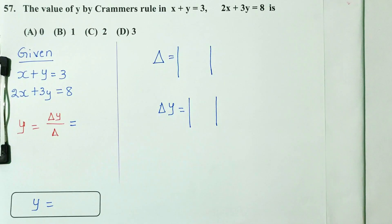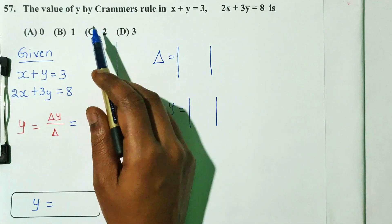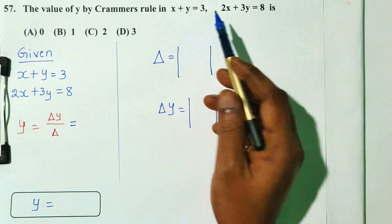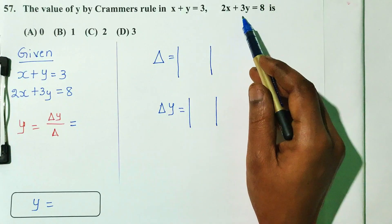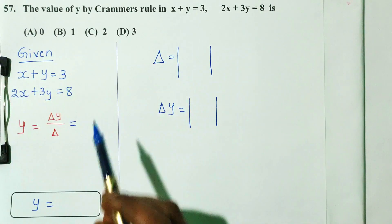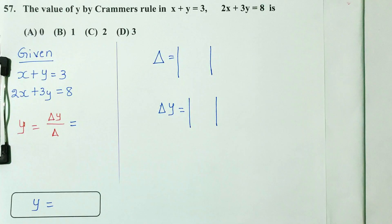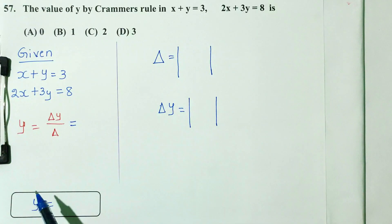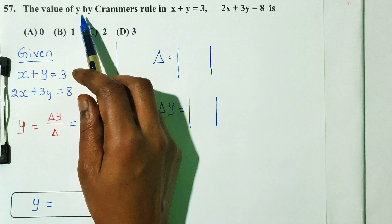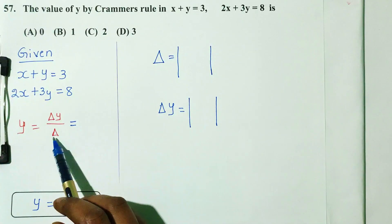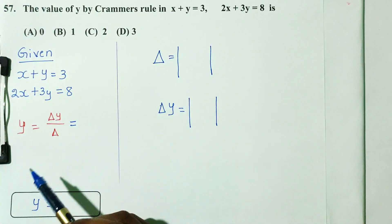Question number 57. Find the value of y by Cramer's rule in the system: x plus y equals 3 and 2x plus 3y equals 8. There are 4 options. The formula for Cramer's rule is y equals delta y by delta.